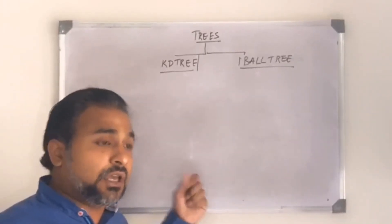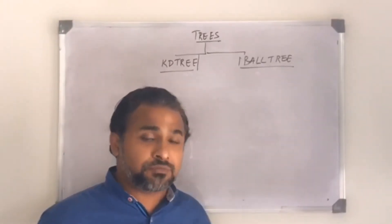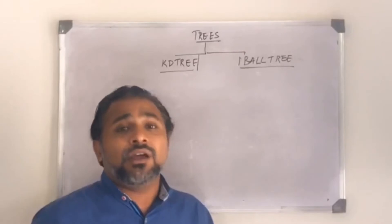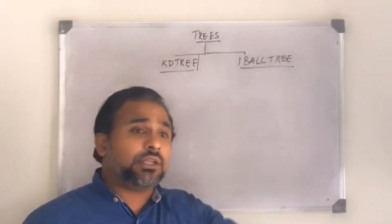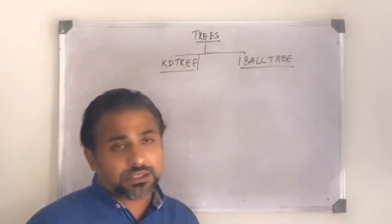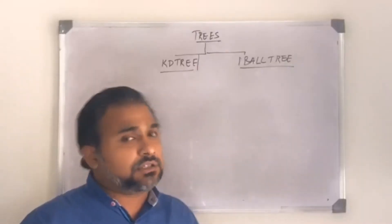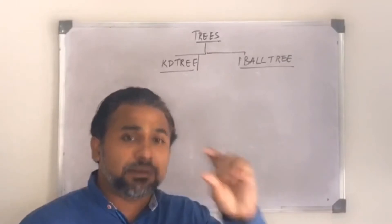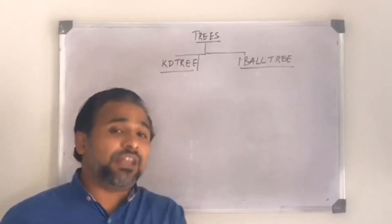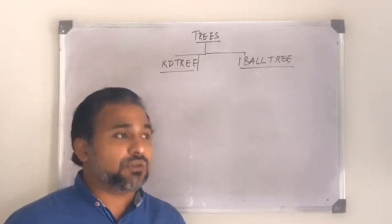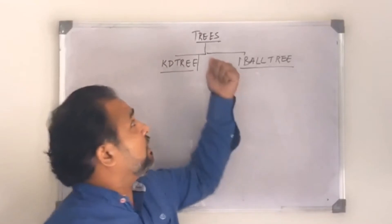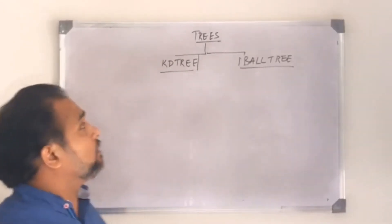If you remember in my first video I was talking about the brute force method — that was the basic method to find out the nearest neighbor. What that method did was: if you have a query point, it will calculate all the distances between that query point and all the points in the coordinate space, using either Euclidean or Manhattan distance, and eventually find the minimum distance and the nearest neighbor. That method is computationally very expensive because you have to calculate all the distances.